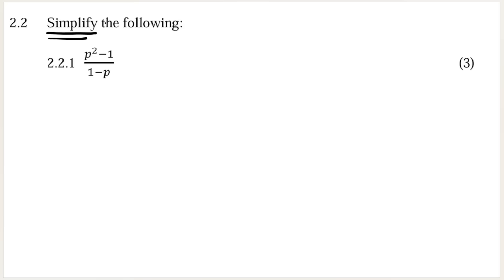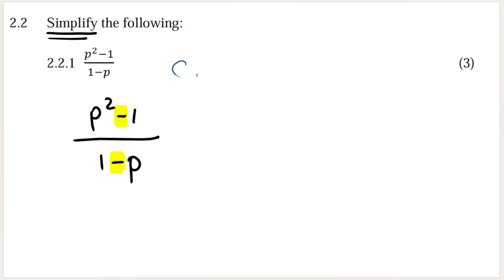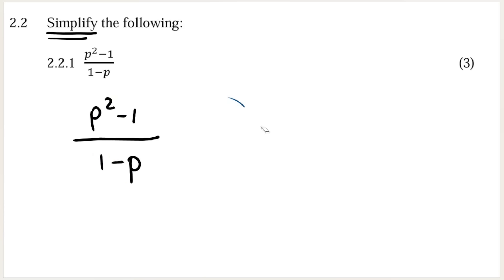In this question it says simplify the following — there's no mention of the word factorize. However, if you see something like p squared minus one over one minus p, because we have multiple terms — two terms at the top, two terms at the bottom, separated by a plus or minus — you cannot just say the ones cancel or divide the p. You cannot do that when you have multiple terms. If you have more than one term, you must factorize first.